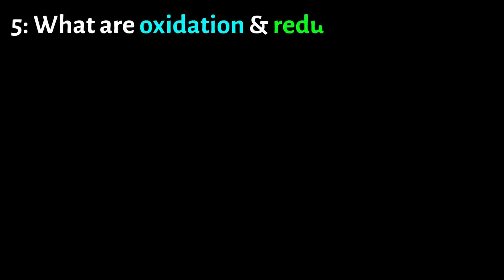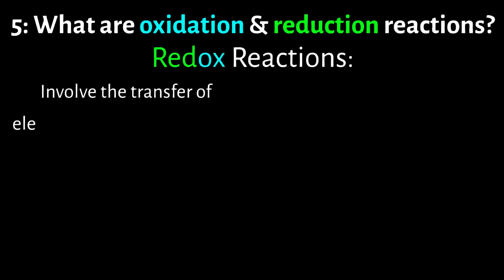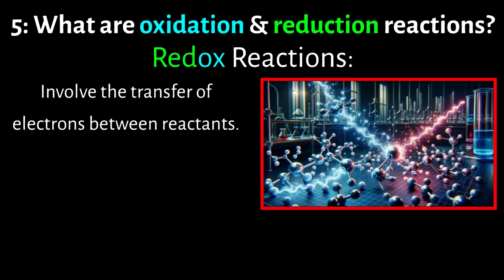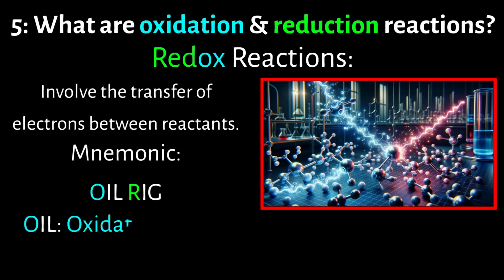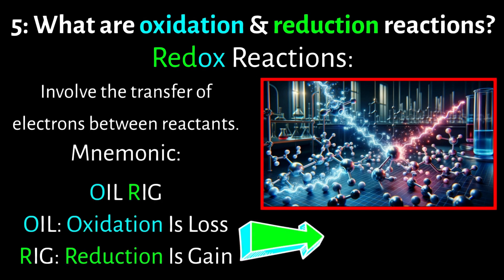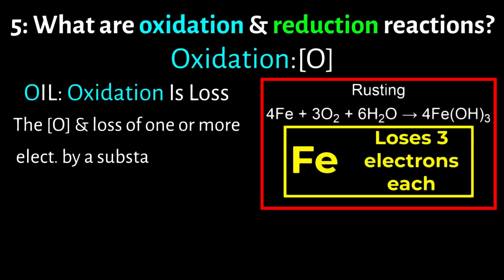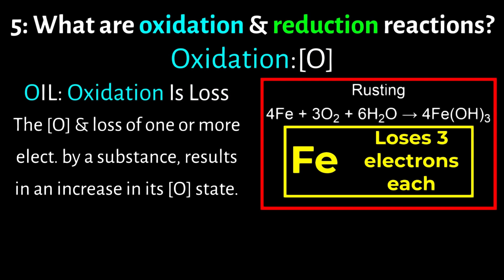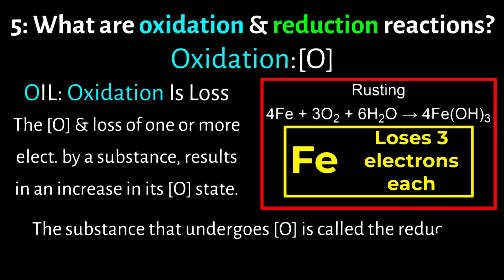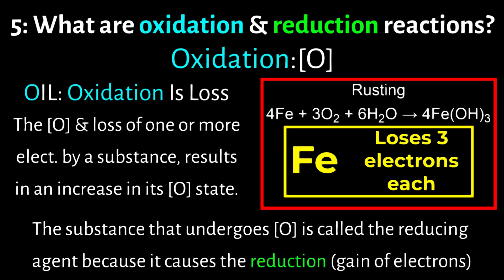Number 5: What are oxidation and reduction reactions? Oxidation and reduction reactions, known as redox reactions, involve the transfer of electrons between reactants. The best way to remember the transfer is through the mnemonic OIL RIG, where oxidation is loss and reduction is gain of electrons. The oxidation and loss of one or more electrons by a substance results in an increase in its oxidation state or oxidation number. The substance that undergoes oxidation is called the reducing agent because it causes the reduction of another substance.